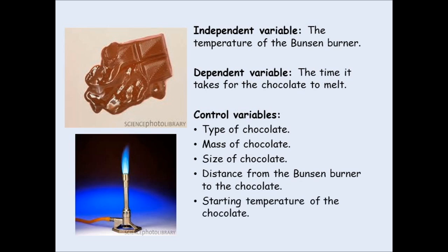Also the starting temperature of the chocolate. If one of your bars of chocolate has been in the freezer and it's nice and solid, it will take more energy to melt. If, however, it's already half melted, it won't take as much energy. So this is affecting your results and thus must be controlled. This is only a few — there will be a lot of variables that need to be controlled to make this a fair test, so that you can see for certain that the temperature of the Bunsen burner affected how long it took for the chocolate to melt.